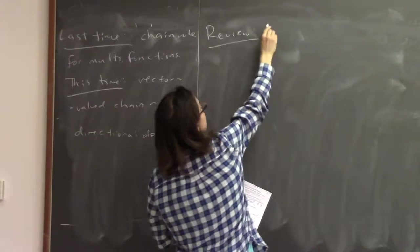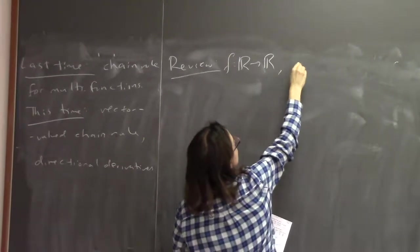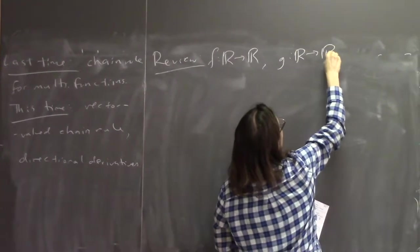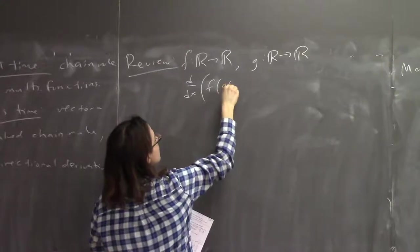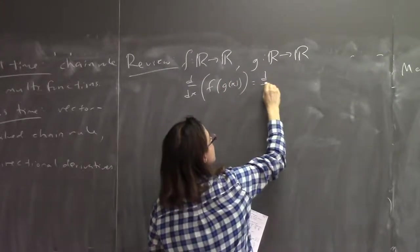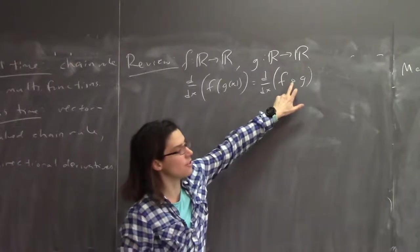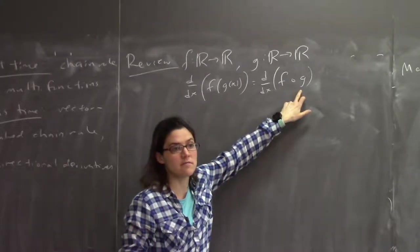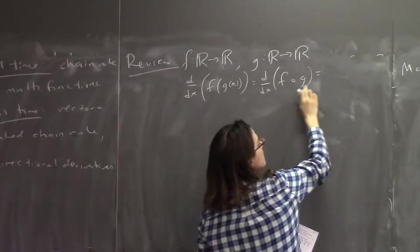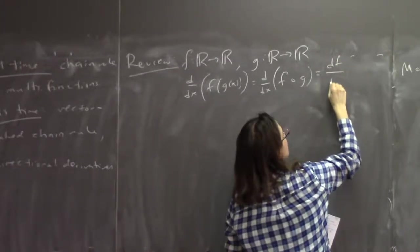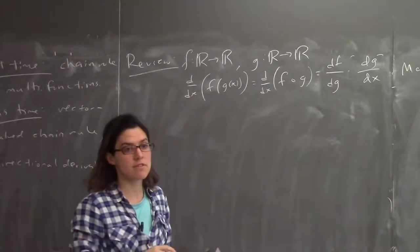If you have two functions from ℝ to ℝ, you can compose them. The derivative of f(g(x)) — or f∘g — is the derivative of the outside function with respect to the inside function, df/dg, times the derivative of the inside function with respect to x, dg/dx. This is what we did last time.